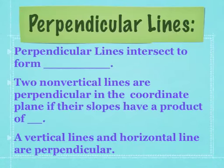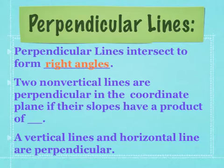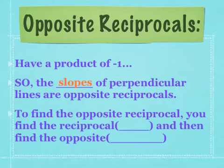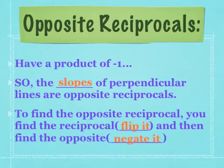Perpendicular lines intersect to form right angles. Two non-vertical lines are perpendicular in the coordinate plane if their slopes have a product of negative 1 — meaning when we multiply them together, it equals negative 1. A vertical line and a horizontal line are also perpendicular. The slopes of perpendicular lines are opposite reciprocals. To find the opposite reciprocal, flip the slope and then negate it.